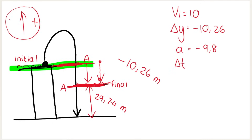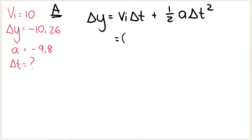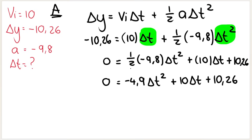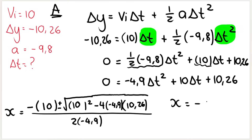We have three known variables for A and are solving for time. Using Δy = vi·Δt + ½a·Δt²: −10.26 = 10·Δt + ½(−9.8)·Δt², giving −4.9·Δt² + 10·Δt + 10.26 = 0. This is a quadratic equation. In standard form, a = −4.9, b = 10, c = 10.26. Applying the quadratic formula gives two answers: negative 0.75 seconds (rejected, as time cannot be negative) and 2.79103 seconds. So the time for A to reach 29.74 meters above the ground is 2.79103 seconds.